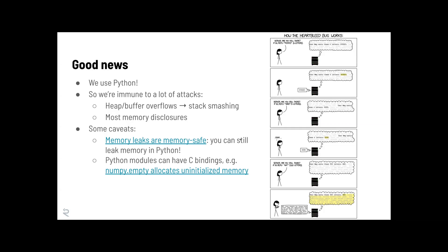Just because a module is a Python module doesn't mean it doesn't have sharp edges underneath. Many Python modules like NumPy involve invocation of a C or C++ compiler during installation — they're mostly written in C with Python bindings. That means unexpected sharp edges exist. For instance, NumPy.empty gives you an uninitialized block of memory, which could contain sensitive secrets from the server.